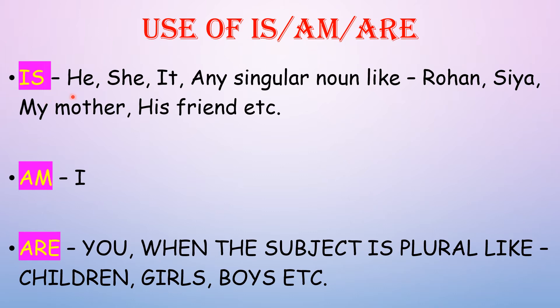"Is" is used with the subject when it is third person singular — like he, she, it, or any singular noun such as Rohan, Sia, my mother, his friend, etc. "Am" is always used with the subject "I". And "are" is used when the subject is "you" or any subject that is plural, like children, girls, boys, etc.